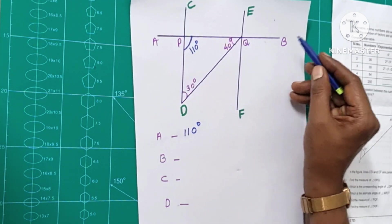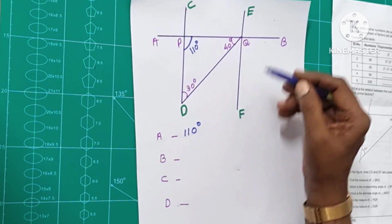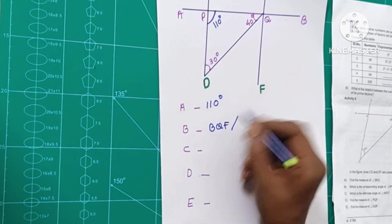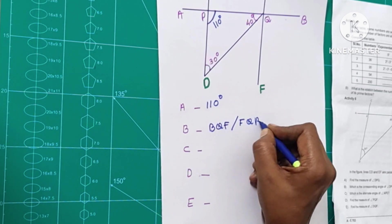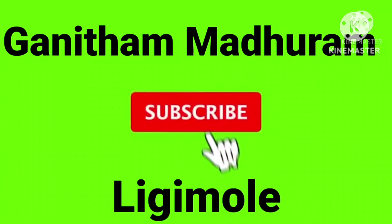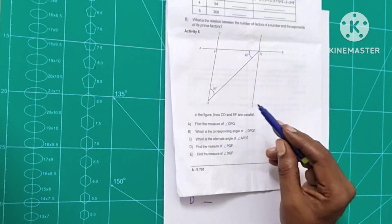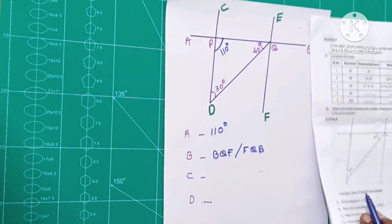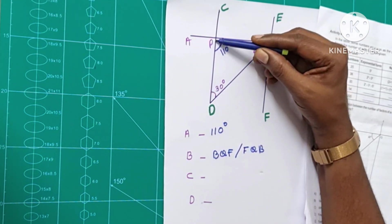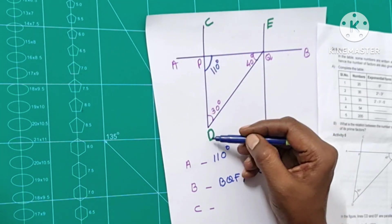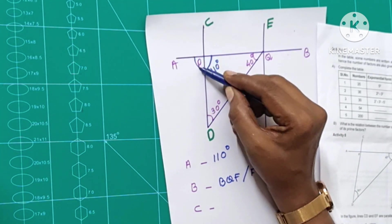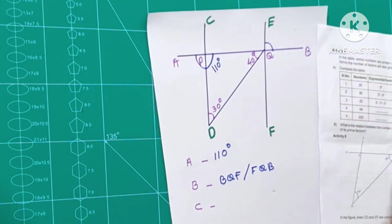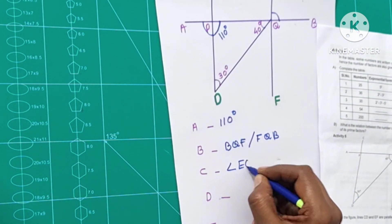Then, we call it the two angles. What is it? BQF. The other angle is FQB. Then we call it BQF, and the other angle is FQB.